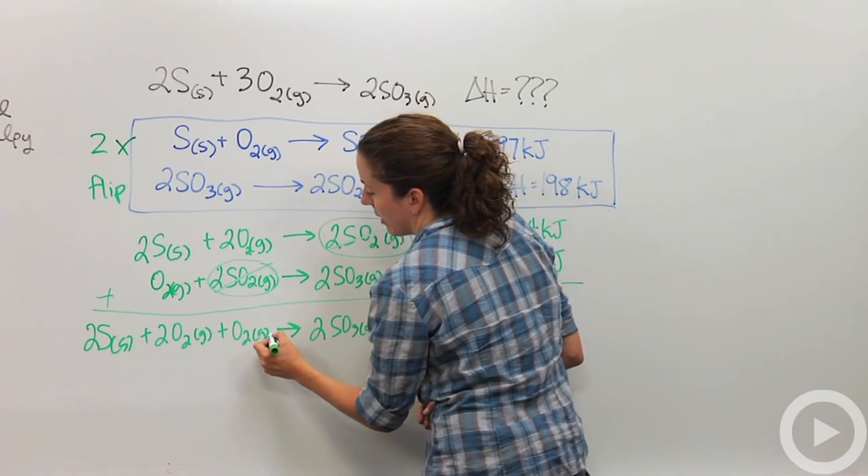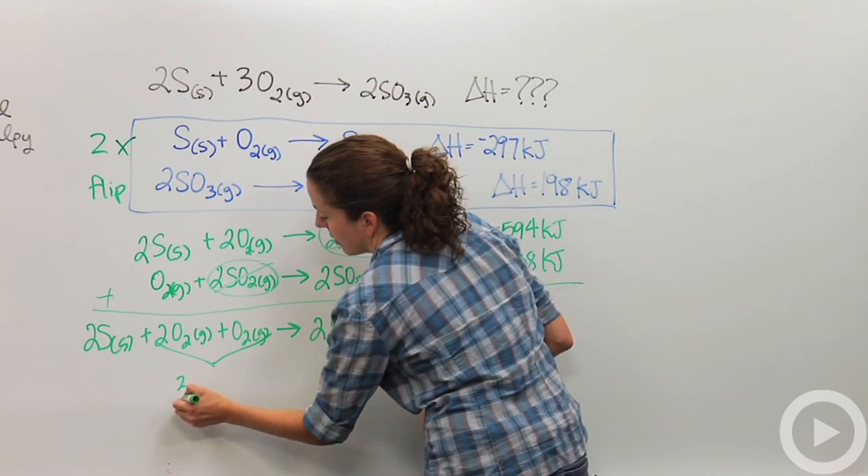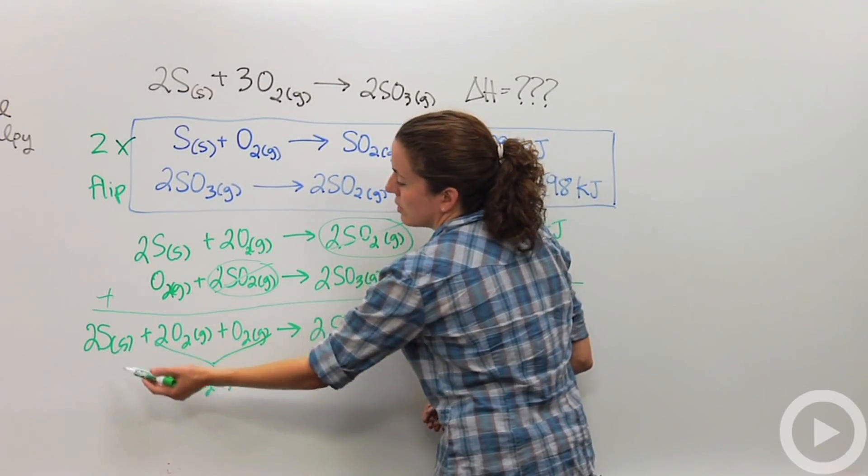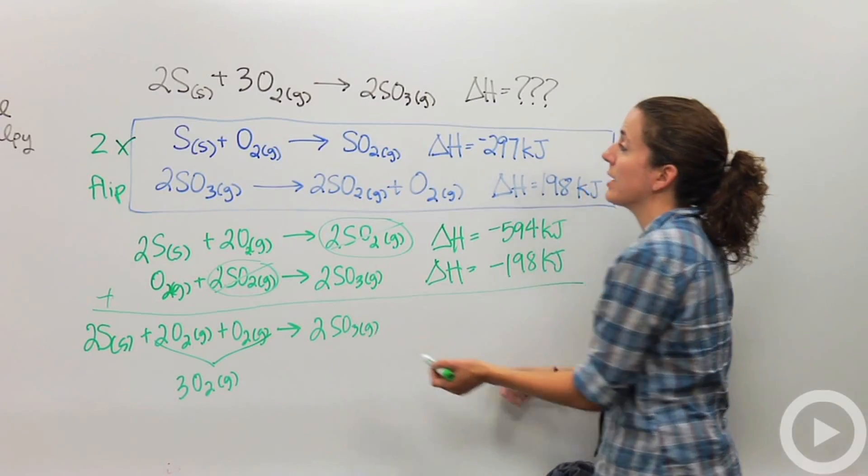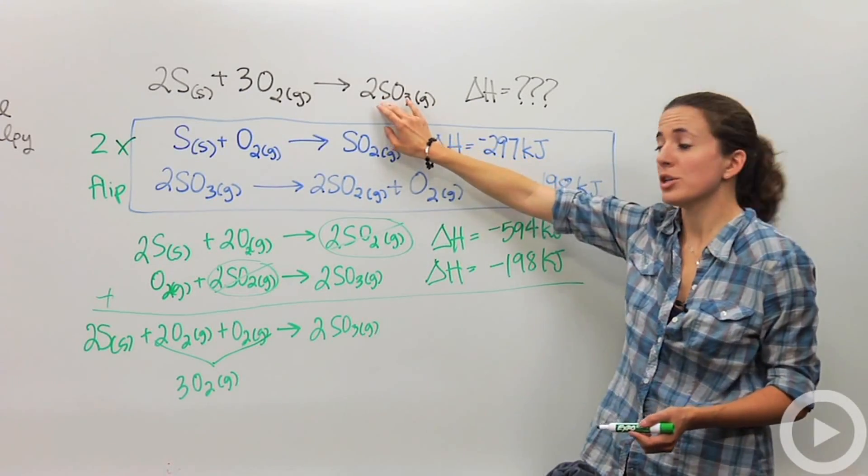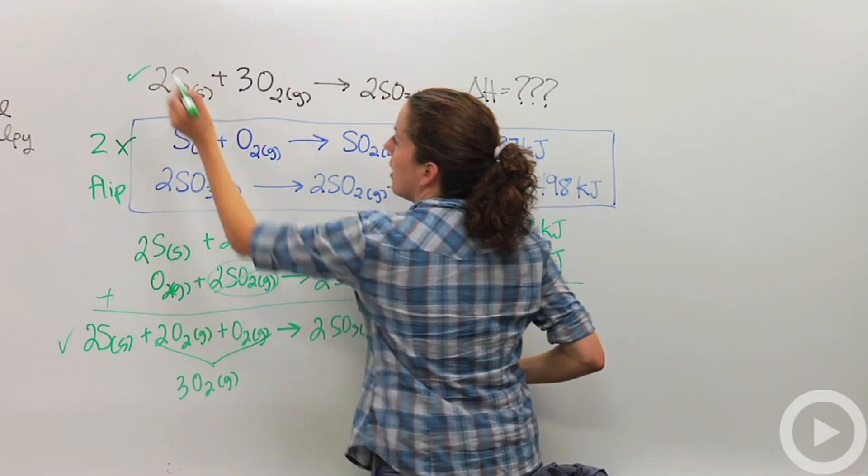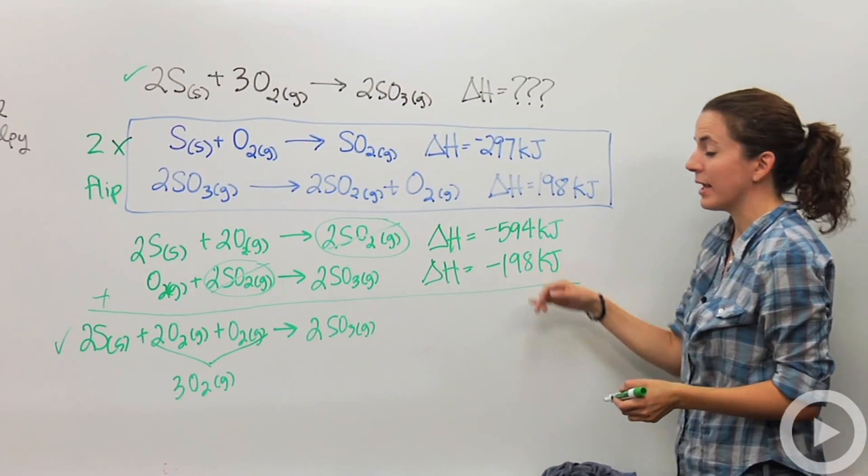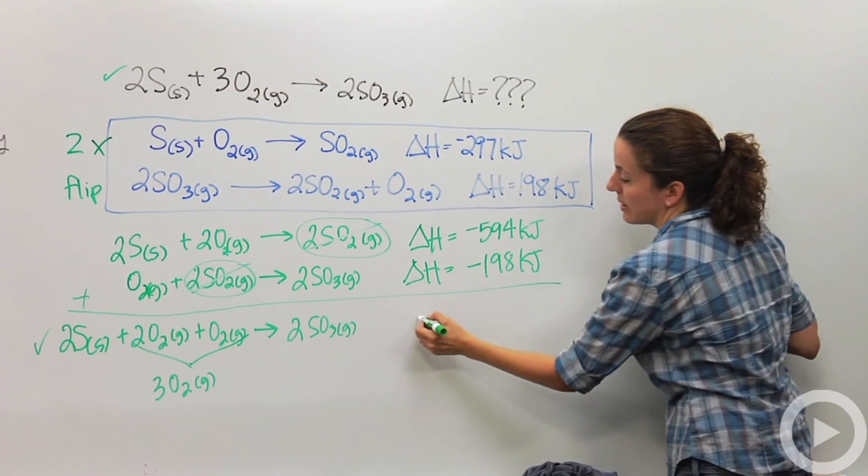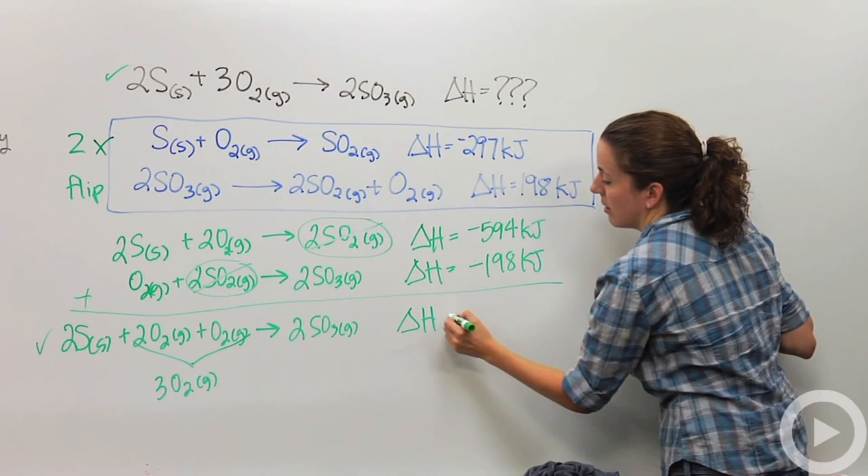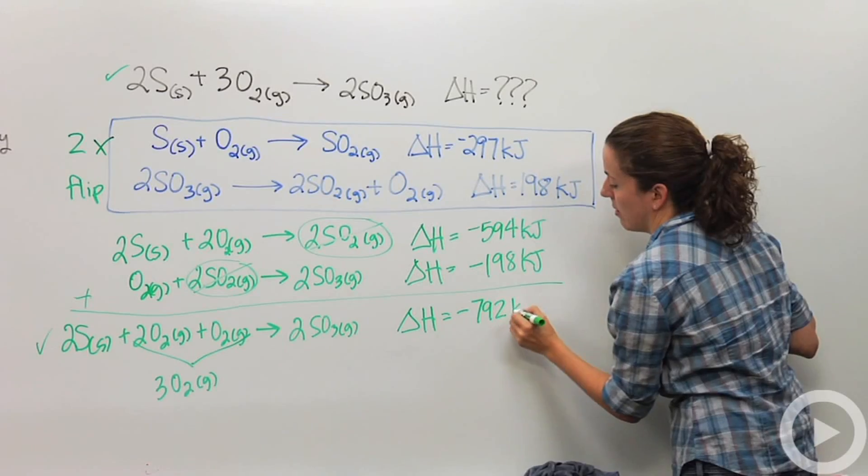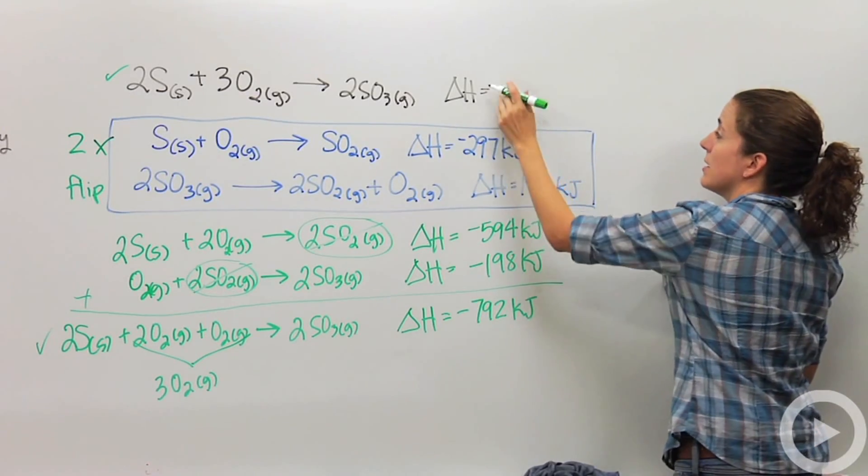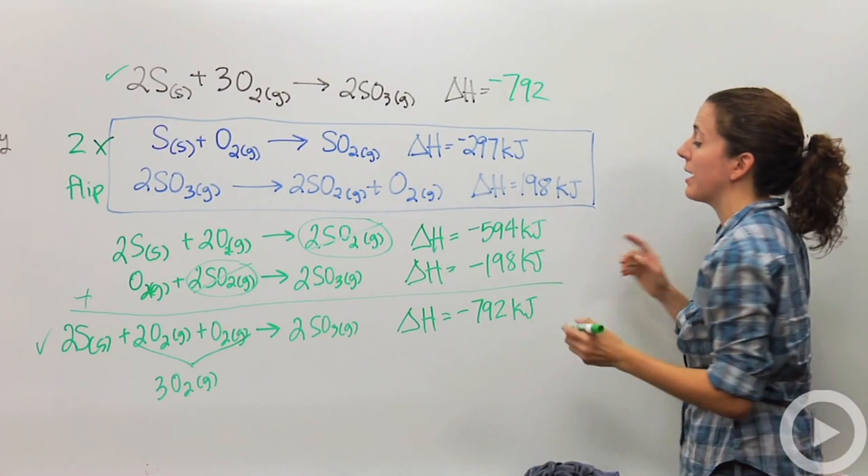So what if I add these together, two plus one is three, so I can say three moles of oxygen gas. So two sulfur atoms are two moles of sulfur plus three moles of oxygen yields two moles of sulfur trioxide, which is exactly what my original equation is. So yes, I did this properly. I can check it off. And so I want to find my delta H. I'm just going to add these guys up. So negative 594 plus negative 198 is going to give me negative 792. So negative 792 kilojoules. So now I can know that this is negative 792 kilojoules because Hess's law says that I can do this.